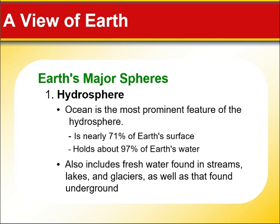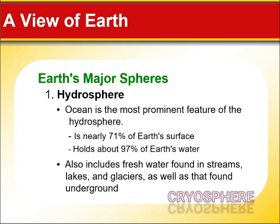Let's start with the hydrosphere. The ocean is the most prominent feature of this sphere of the Earth. It's nearly 71% of the Earth's surface and holds about 97% of the Earth's water. The hydrosphere also includes fresh water from streams, lakes, and glaciers, as well as that found underground. The frozen part of the hydrosphere is called the cryosphere.